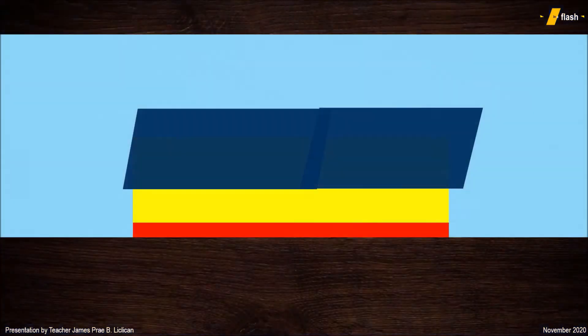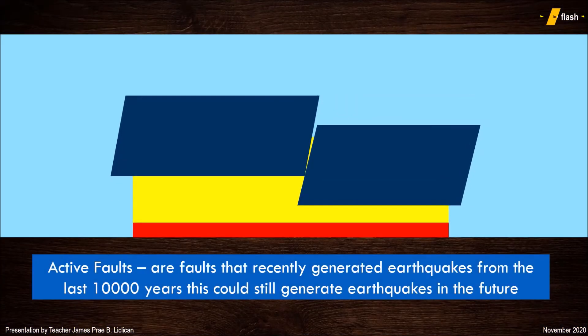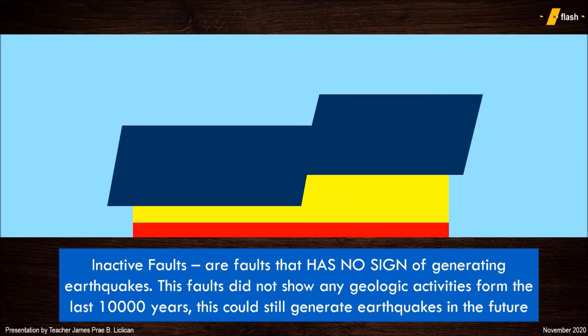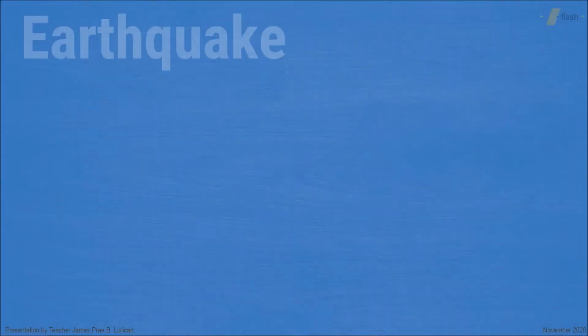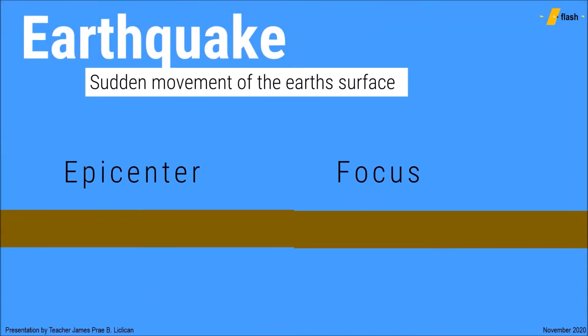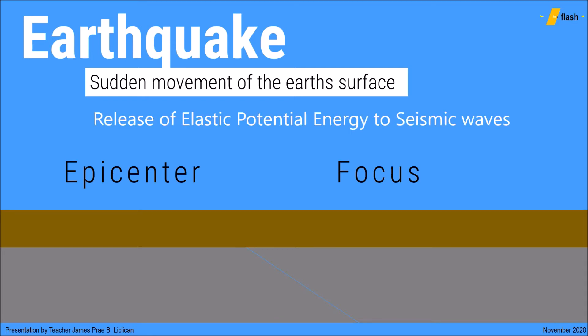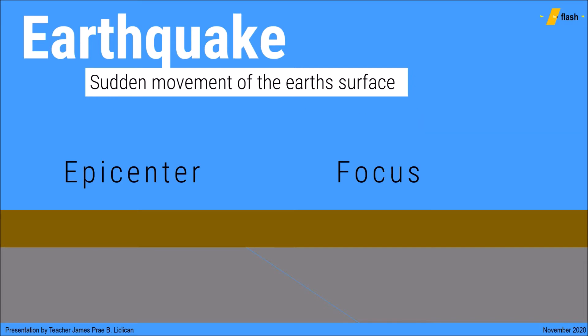Faults are locations in which energy gets stored as elastic potential energy from plate movements. Over time, this stress from compression or stretching returns to its original form, releasing stored elastic potential energy into kinetic energy in the form of an earthquake. In order to understand earthquakes further, we also have to look at their anatomy.